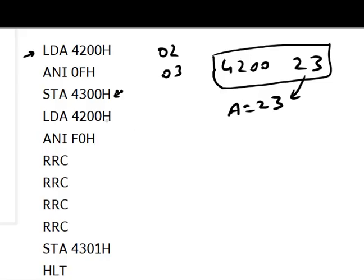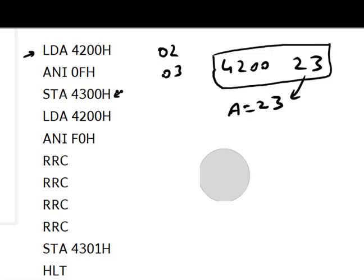Next, ANI 0F — ANI is AND Immediate, a masking instruction. We AND the value 23 with 0F. Since 3 AND F gives 3, and 2 AND 0 gives 0, what remains in A is 03. This isolates the lower BCD digit.